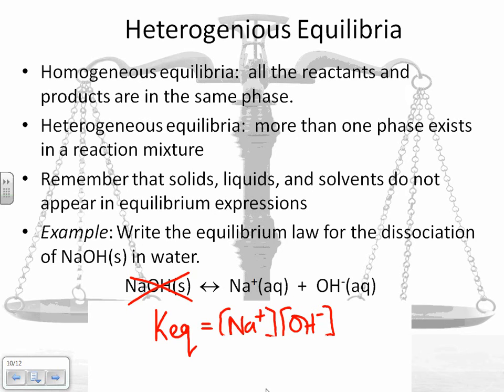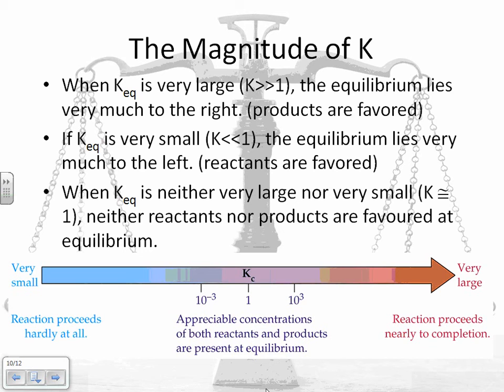All right, so now that we've gone through some examples of calculating K, I just want to take a minute to talk about what that means. The magnitude of K. Basically, it tells us which way the equilibrium lies. So are we making lots of reactants, or are we making lots of products? When KEQ is very large, so K is much bigger than 1, the equilibrium lies very much to the right, which means your products are favored. If KEQ is very small, much less than 1, the equilibrium lies very much to the left, which means reactants are favored. When KEQ is neither very large nor very small, so when it's around 1, neither reactants nor products are favored at equilibrium.